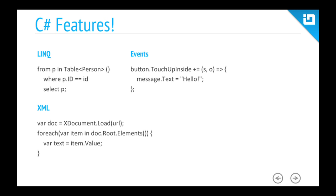The big benefit is getting to use C#. You get things like LINQ — for example, looping over a person table in a SQLite database. You get familiar events, like hooking up the TouchUpInside event on a button. And you get excellent out-of-the-box XML support. Working with XML in Objective-C without a third-party library can be really painful, so having C#'s XML capabilities is a major advantage.